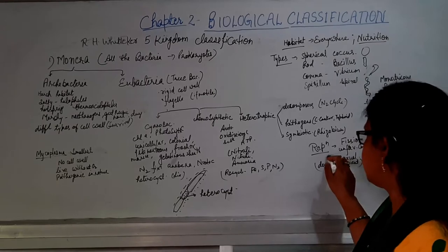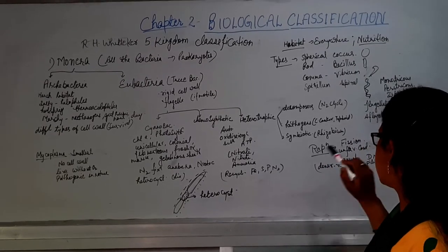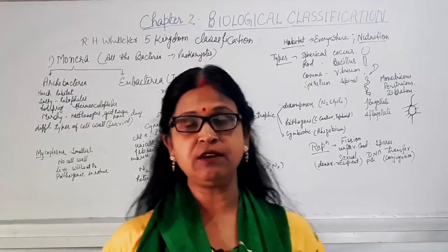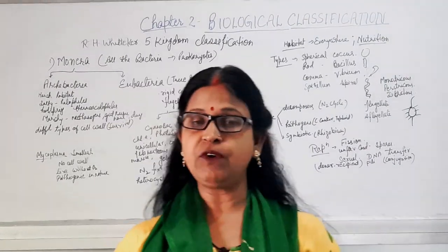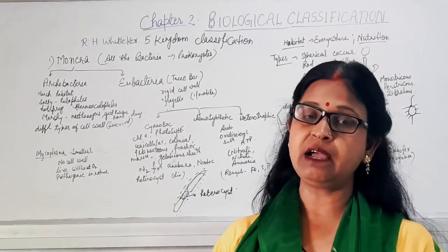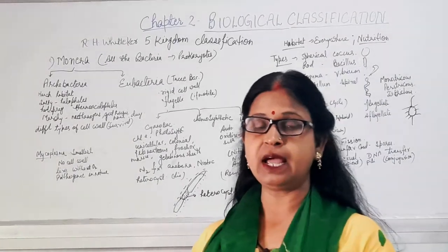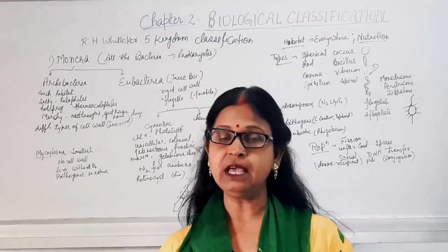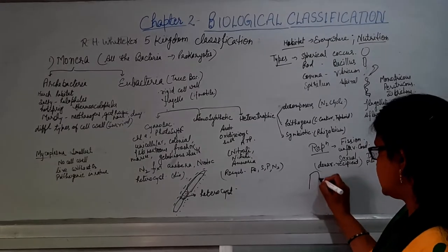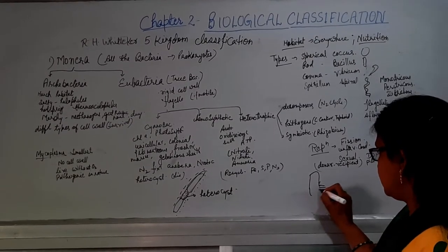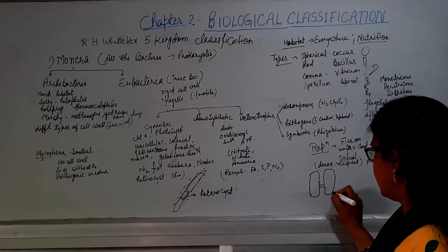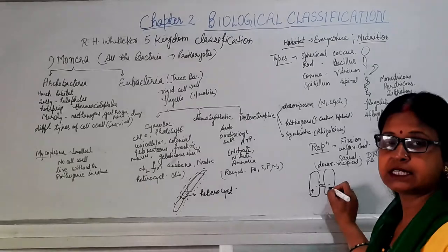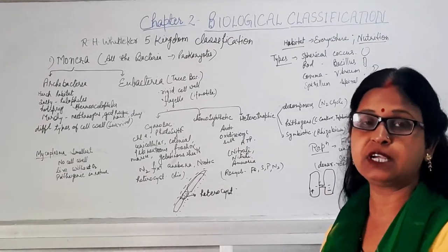In some cases, sexual reproduction also occurs. This special type is known as conjugation, in which DNA is transferred. Two bacteria come closer — one acts as the donor and the other as the recipient. A special structure called pili helps the bacteria in this process, and then some part of DNA is transferred from donor to recipient.